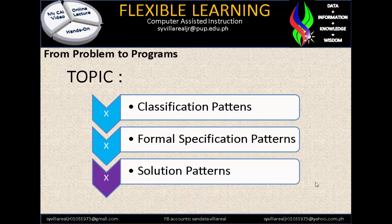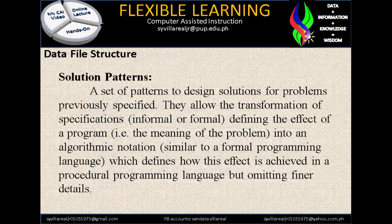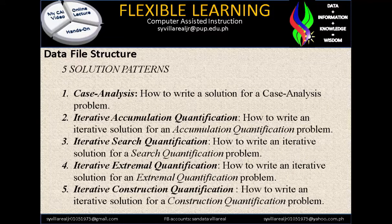We are finished now with formal specification patterns. Let's go to our last topic, which is solution patterns. Solution patterns are a set of patterns to design solutions for problems previously specified. They allow the transformation of a specification — formal or informal — defining the effect of a program into an algorithmic notation similar to formal programming, which defines how this effect is achieved in a procedural programming language, but omitting finer details. We have five solution patterns.